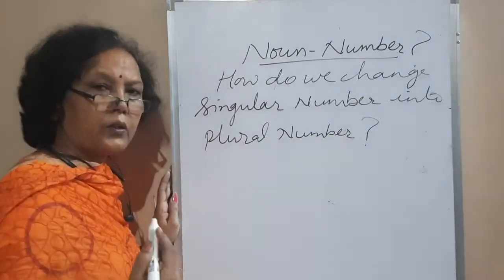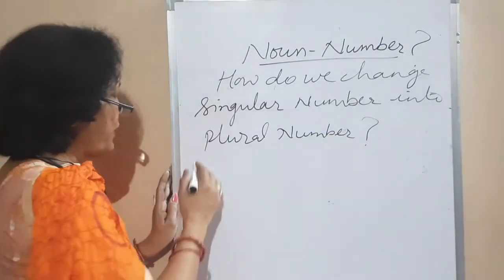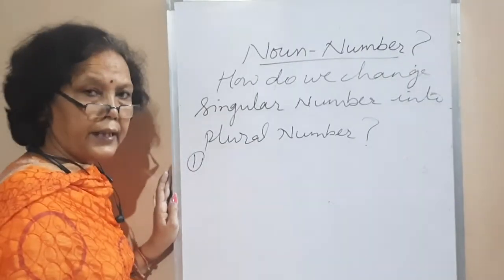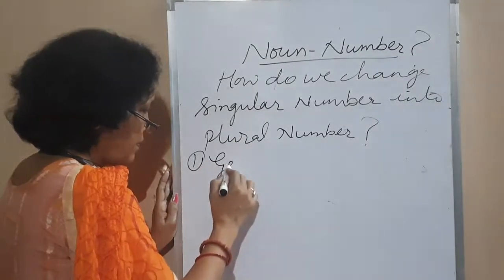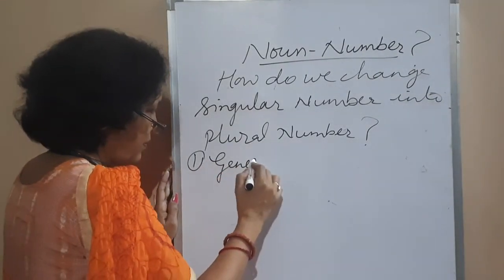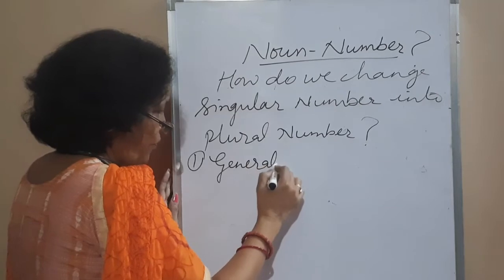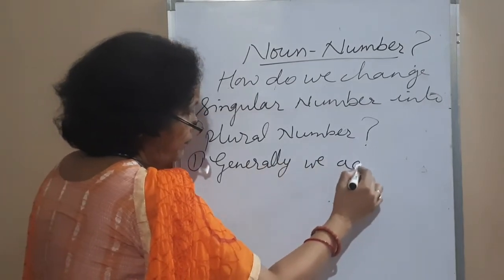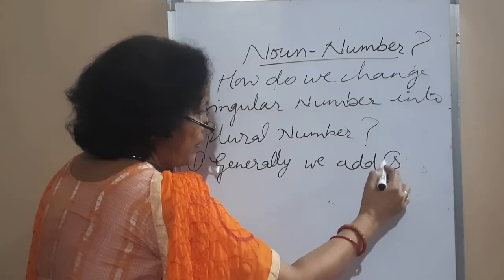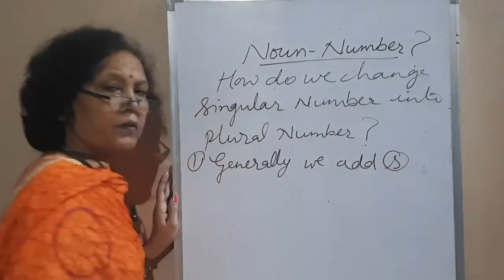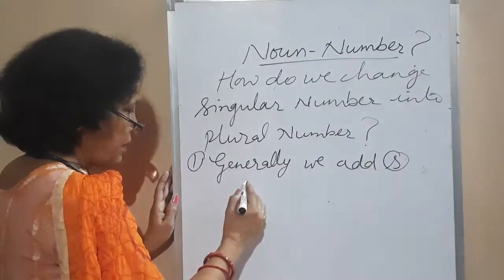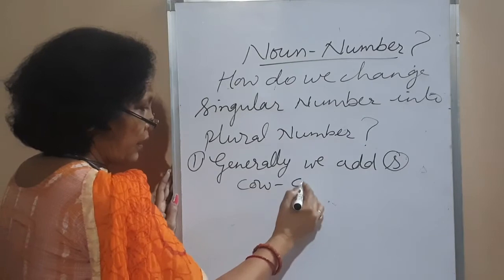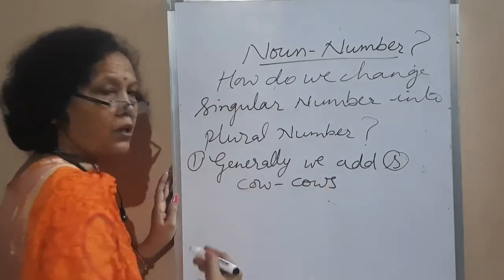There are two or three rules. First one: generally, we add the letter S. For example, cow becomes cows, dog becomes dogs.